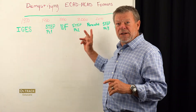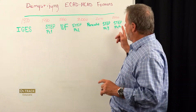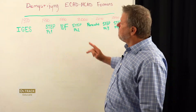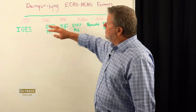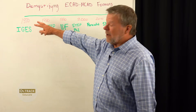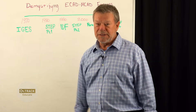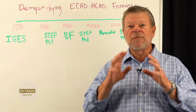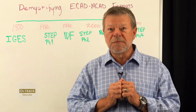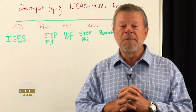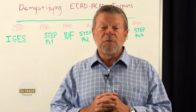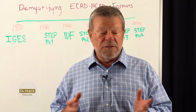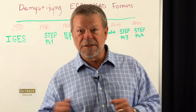I have a timeline here that will help you envision when these things happen and help keep me on track. I'm going to start in prehistoric times before 1970 because it's important. The first MCAD system was put together in 1963 by Lockheed and it was strictly for drawing aircraft parts. In fact, it was called electronic drafting at the time.